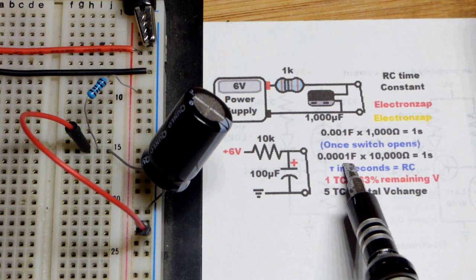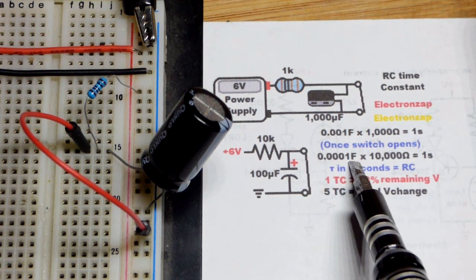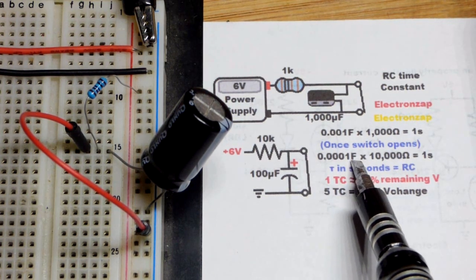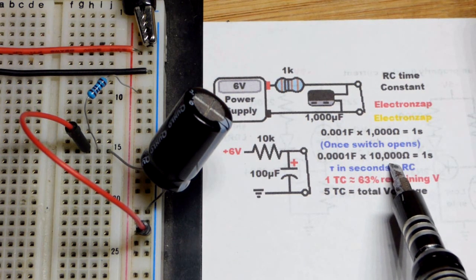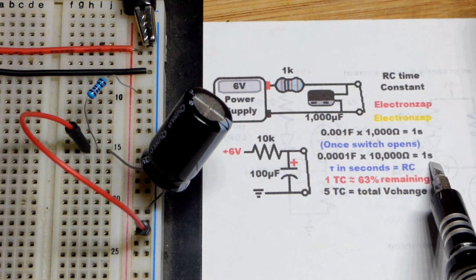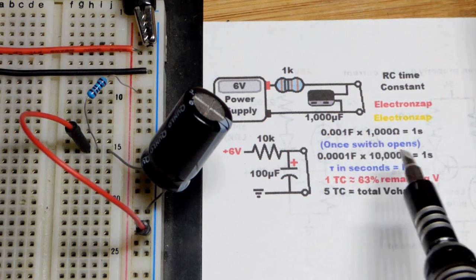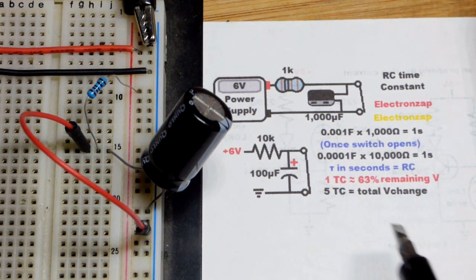The 100 microfarad is 0.0001 farad or one ten-thousandth of a farad. So you need to multiply that by 10,000 ohms to get one second. You keep adjusting these values until you get the time that you want for the most part.